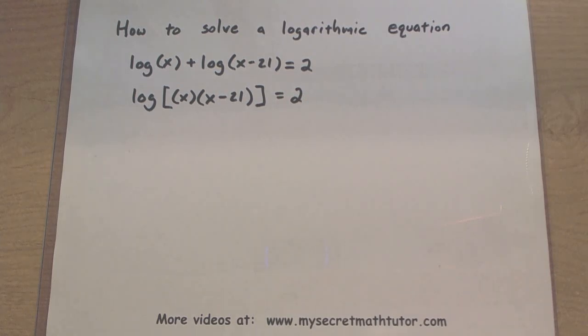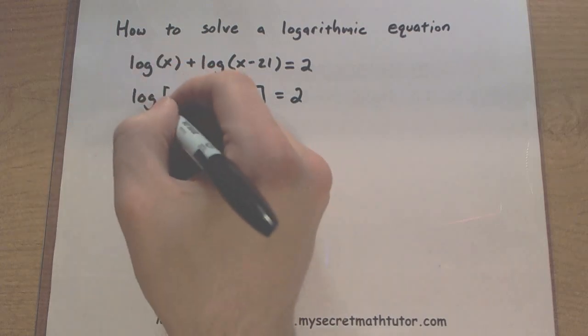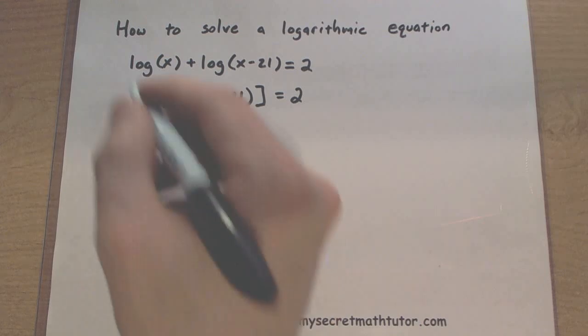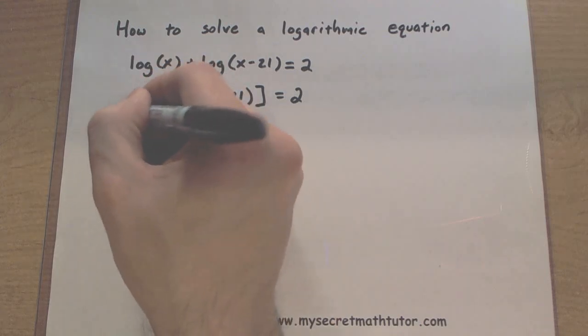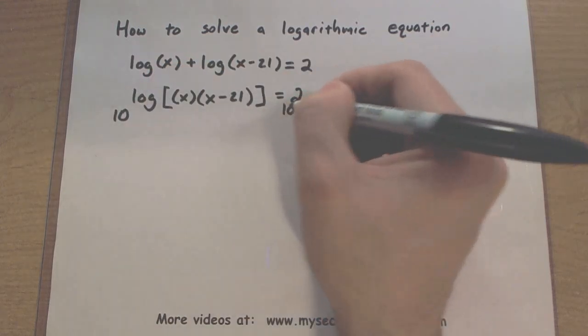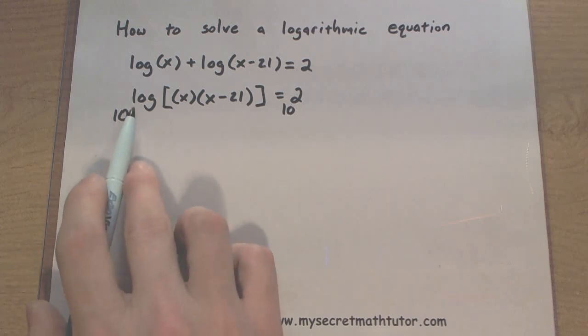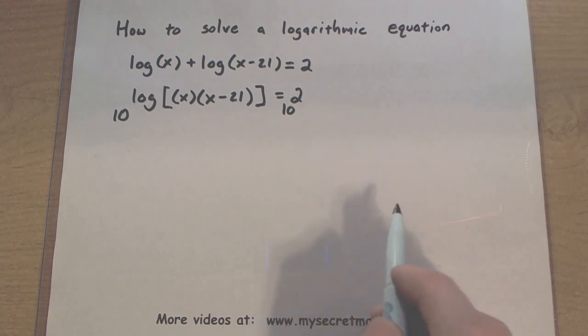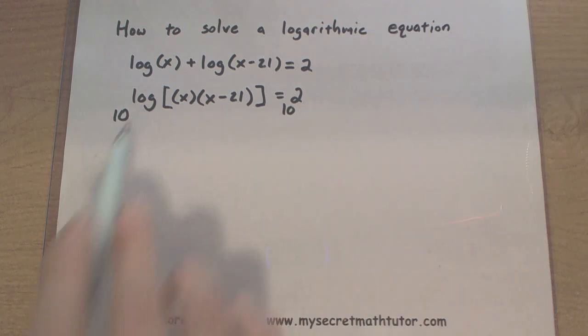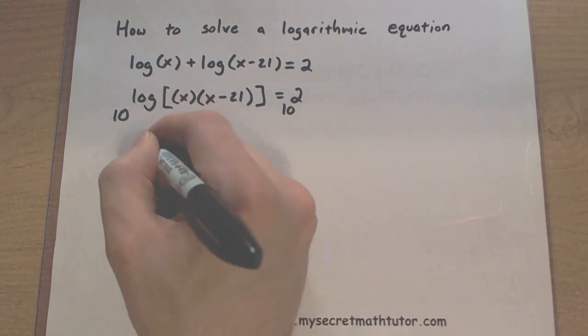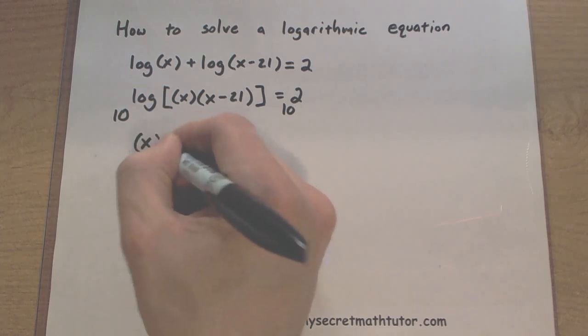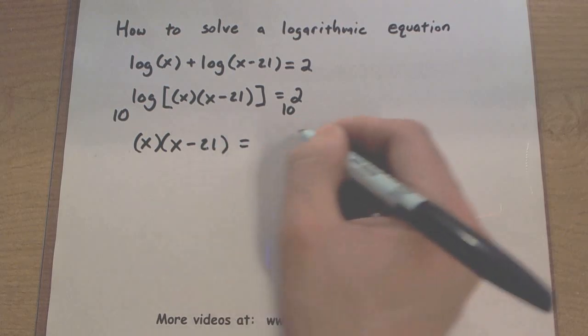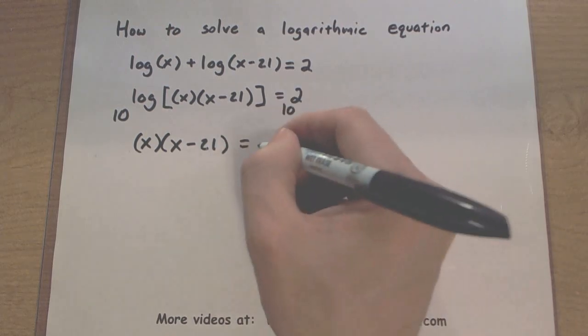Now, to get rid of this log, since there is no base specified, it's essentially a base 10. So we're going to use an exponent with a base of 10. So I'm taking 10, raising it to the power of the left side, and 10 raising it to the power of 2. That's 10 and the log. They'll take care of each other. And then on the other side, I just have to figure out what 10 squared is, so 100.